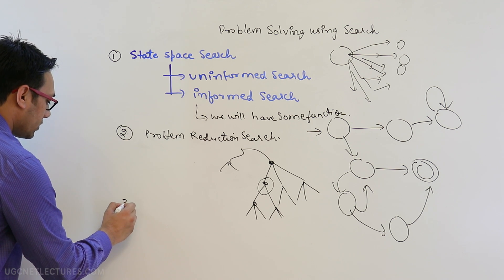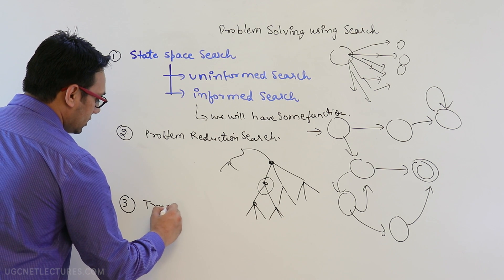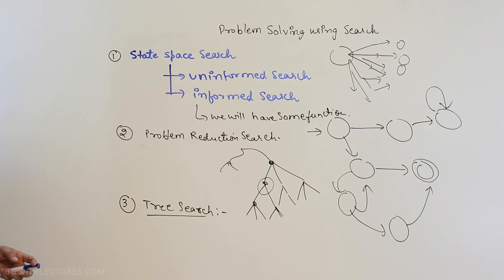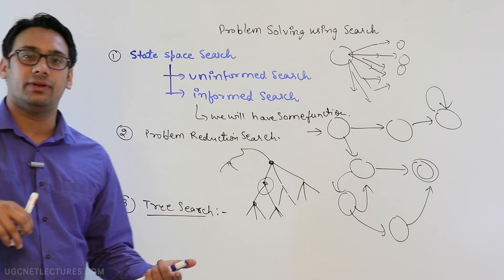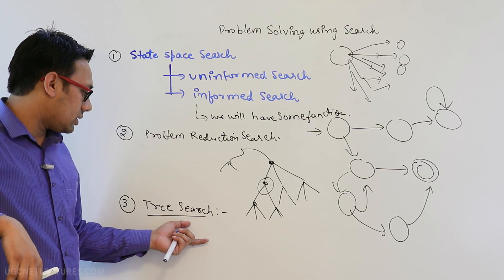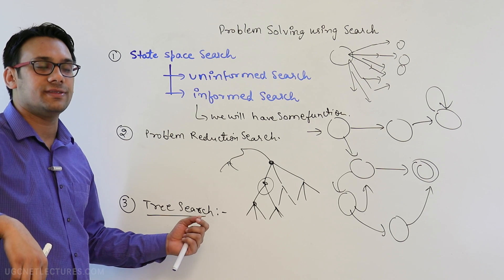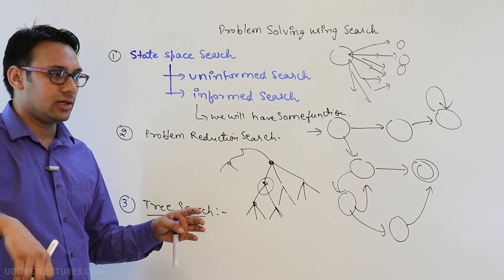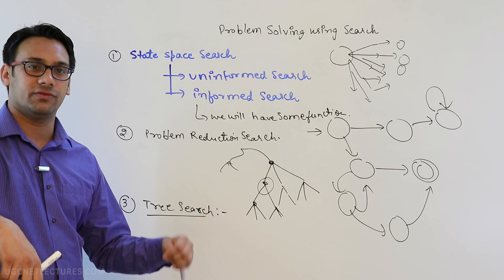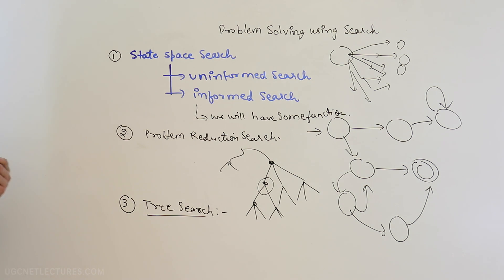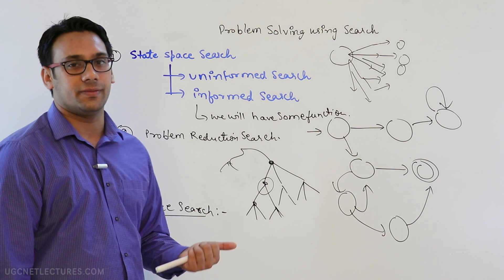After problem reduction search, we discuss solving problems using tree searching algorithms — tree search problems. In tree search, we solve problems related to game playing, like chess. In chess, there are multiple steps you can take, and we find the step that gives maximum benefit. The main idea is to understand how chess-playing programs work, and we will have several lectures on tree search in game trees and how to optimize solutions.